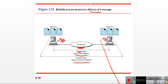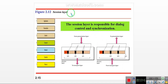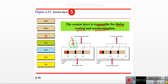The fifth layer is the session layer. The session layer is responsible for dialogue control and synchronization. Whenever data arrives from the presentation layer, the session layer controls and arranges the data and ensures it is synchronized before passing it onward.